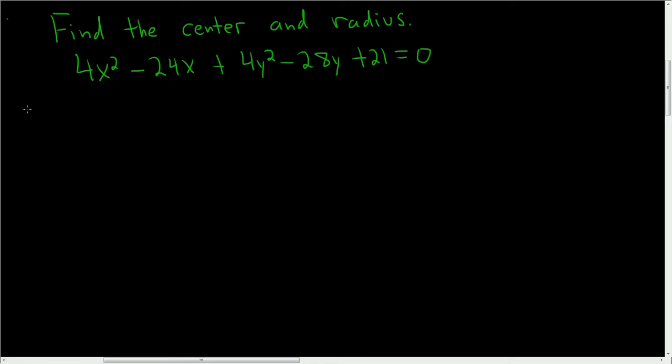We have to find the center and radius. Start by grouping all the x terms and all the y terms and subtracting the 21. So we get 4x² - 24x + 4y² - 28y = -21.